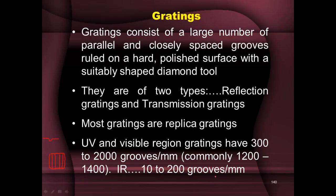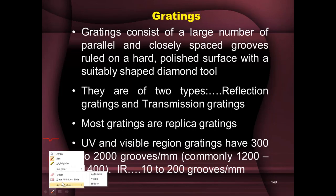For IR, the number of grooves is much lesser — just 10 to 200 grooves per millimeter — because IR radiation has much longer wavelengths. That is why a grating suitable for IR will not work for UV-visible instruments. In general, a grating chosen for shorter wavelengths is not suitable for longer wavelengths and vice versa. In a combination instrument, we take an intermediate value, commonly 1,200 to 1,400 grooves per millimeter.